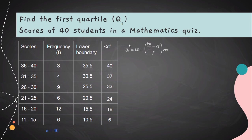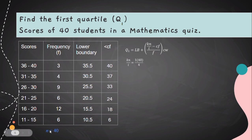Our formula is Q sub 1, because we are looking for quartile 1. Q sub 1 equals LB plus open parenthesis KN over I minus CF over F close parenthesis CW. First, we need the value of KN over I: KN over I equals 1 times 40 over 4, where K is 1 because it is quartile 1, N is 40, and I is 4 because we are looking for quartile. So 1 times 40 over 4 equals 10.